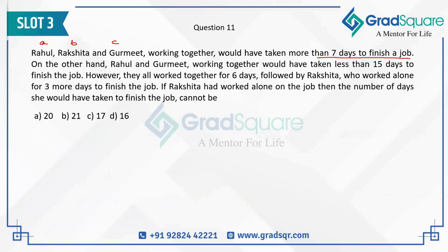If Rahul takes A days to finish the job, in one day Rahul does 1/A units of work. Rakshata does 1/B units of work per day and Gurmeet does 1/C units of work per day. Since they are taking more than seven days, together they must do less than 1/7 of the work per day — because if they did 1/7 per day they would finish in exactly seven days. This is the first equation.